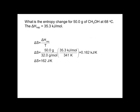What is the entropy change for 50 grams of methanol at 68 degrees? The delta H of vaporization is 35.3 kilojoules per mole. Delta S equals delta H of vaporization divided by the absolute temperature. Changing the 50 grams to moles by dividing by 32, the molar mass of methanol, times 35.3 kilojoules per mole, divided by the temperature 341 Kelvin. This equals 0.162 kilojoules per Kelvin, or 162 joules per Kelvin.